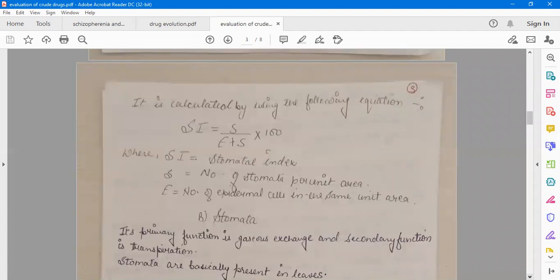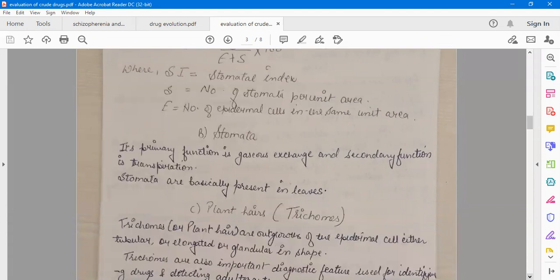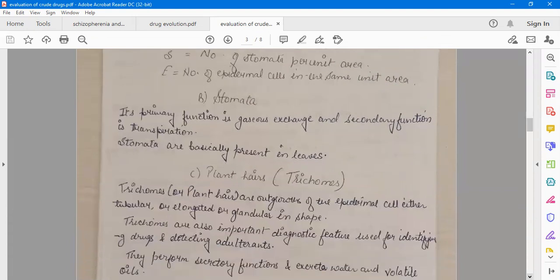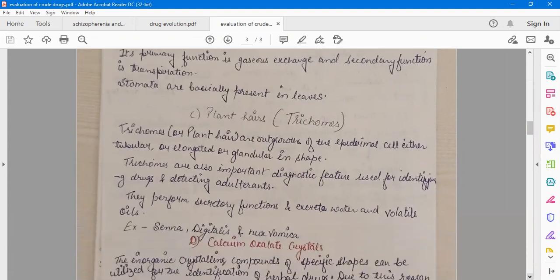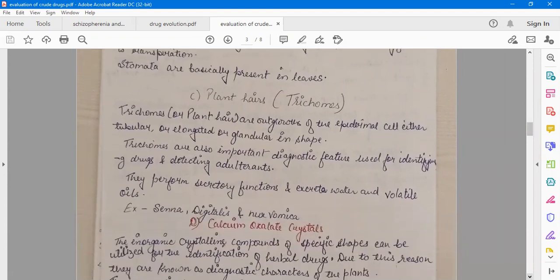Next our parameter is the stomata. Its primary function is gas exchange and secondary function is transpiration. Stomata are basically present in leaves. Next our topic or parameter is the plant hairs or trichomes. Trichomes are outgrowth of the epidermal cell, either tubular, elongated, or glandular in shape.